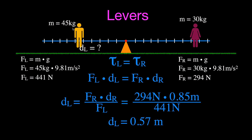That should make sense: the person with more weight applies a greater force, so they need to sit closer to the fulcrum — about 0.57 meters away. Any closer and the teeter-totter would rotate to the right; any farther away and it would rotate to the left.